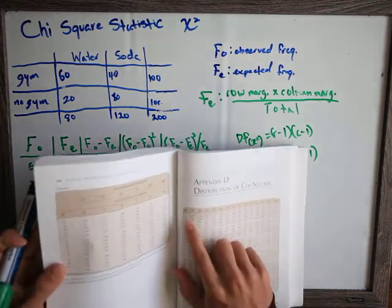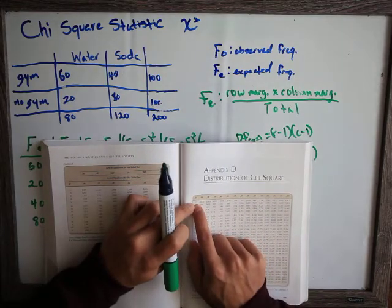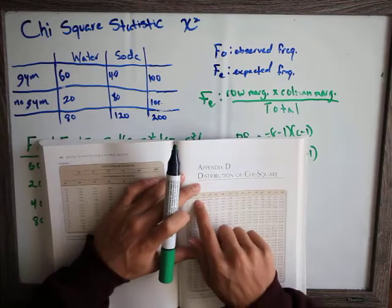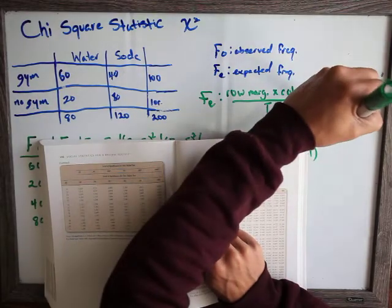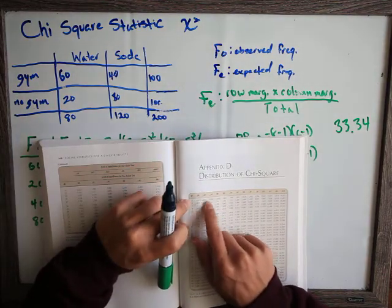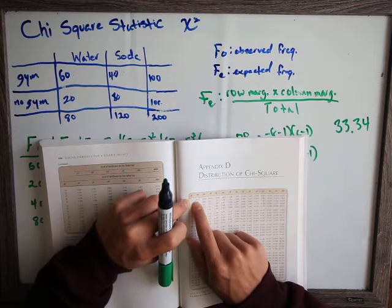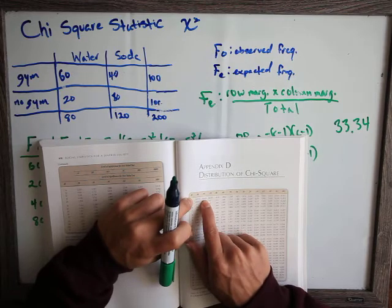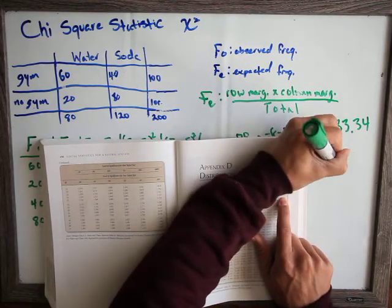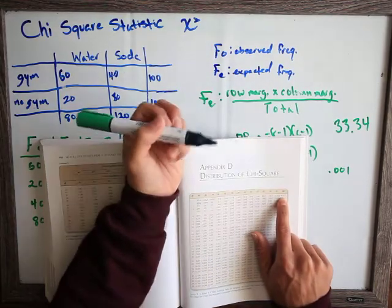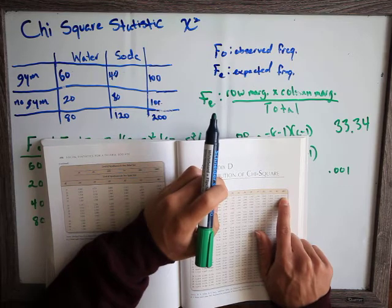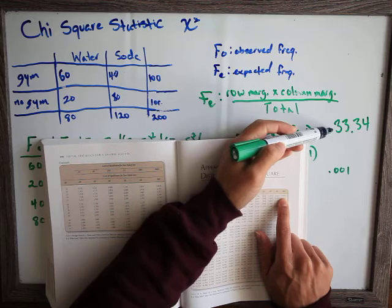We look at the first row of the chart, which has a degrees of freedom of 1, and compare our obtained chi-square of 33.34 to the critical values. If your obtained chi-square is higher than the values in the table, your chi-square is significant. The lowest alpha shown is 0.001, which has a critical chi-square value of 10.827. Our score of 33.34 is much higher than 10.827.